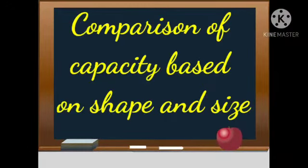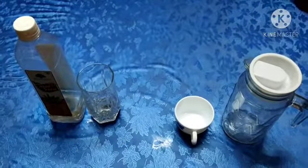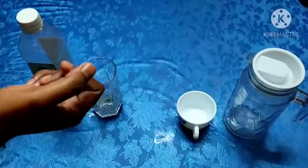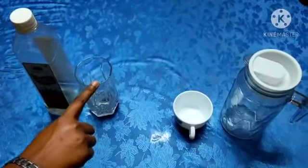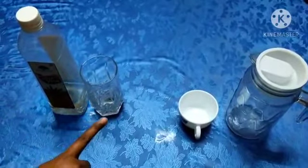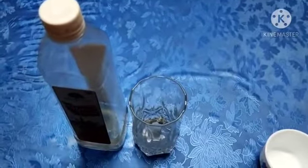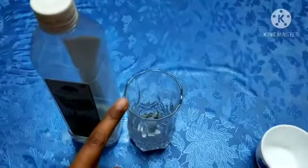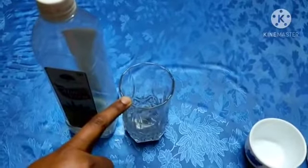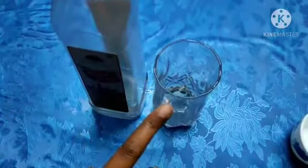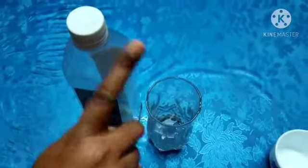Comparison of capacity based on shape and size. Look at the different containers and let's try to find out which has more capacity. As we can see that the glass is small in size, therefore it will hold less water as compared to the bottle. Thus, we say that the bottle has more capacity than the glass.